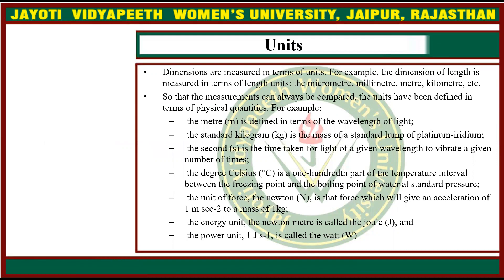What are units? Dimensions are measured in terms of units. For example, the dimension of length is measured in terms of length units. The length units are micrometer, millimeter, meter, kilometer, etc. These are the measurements.